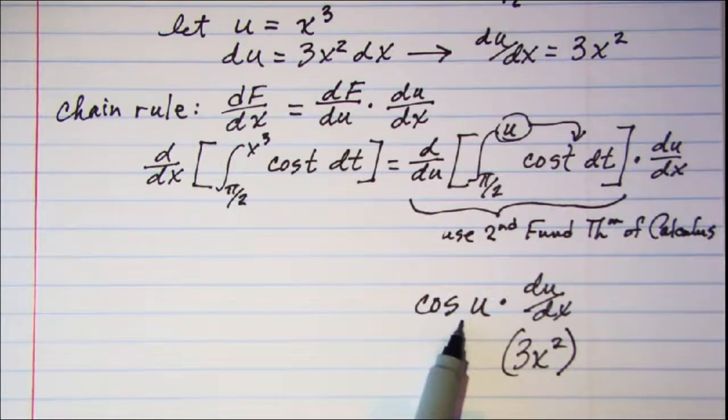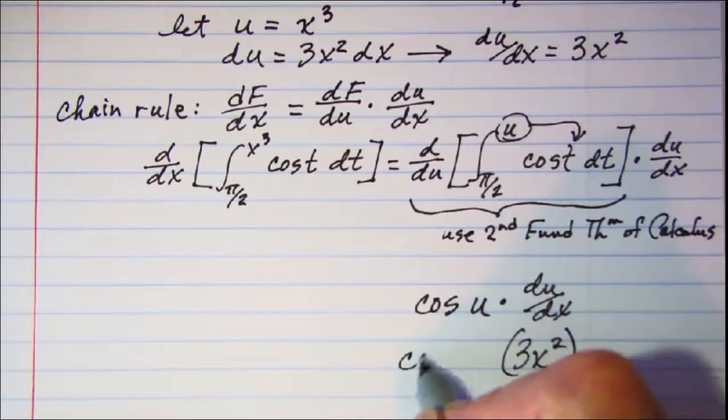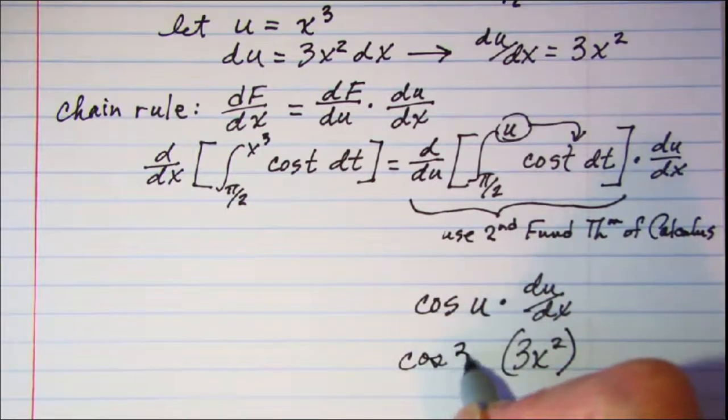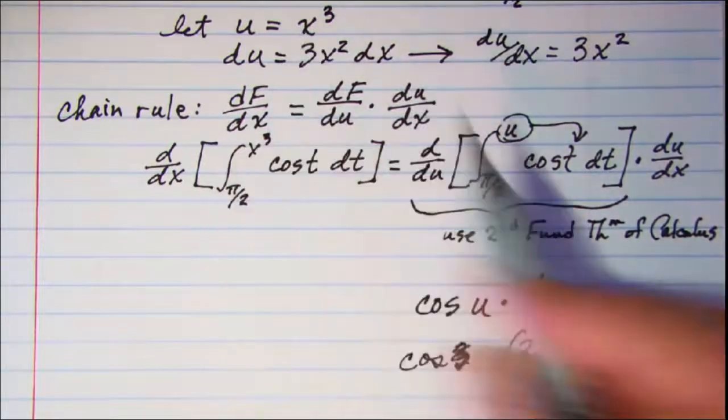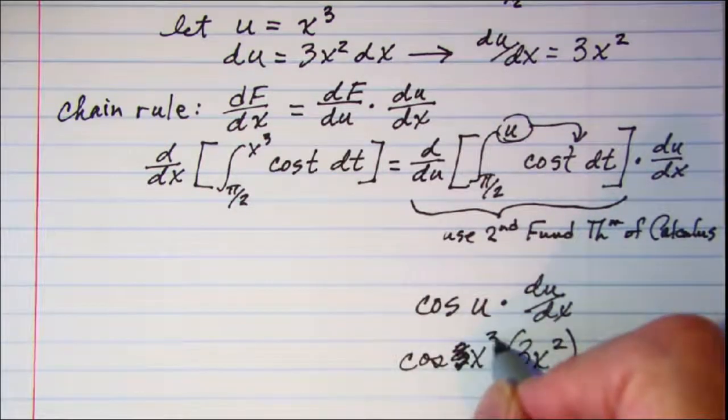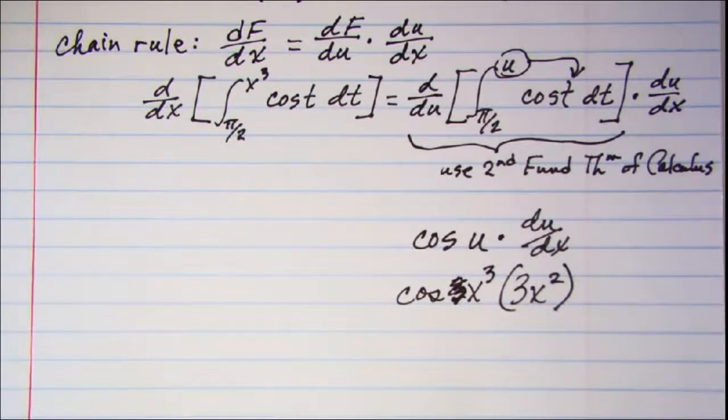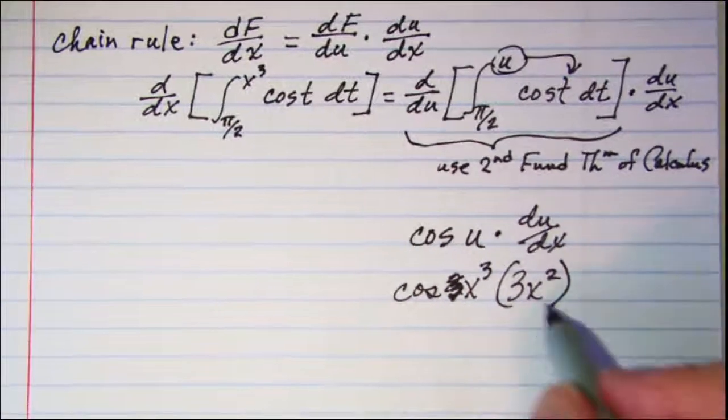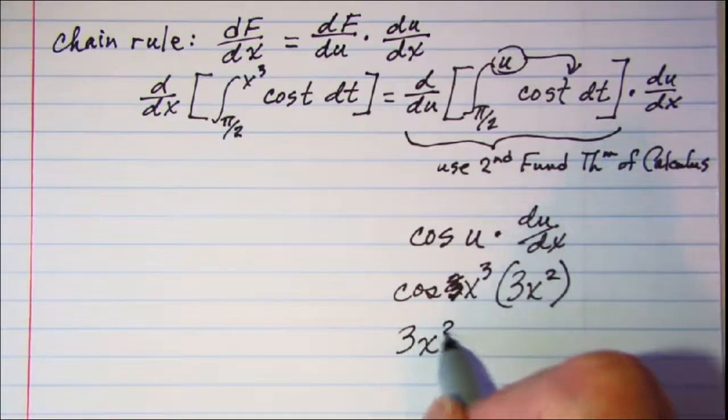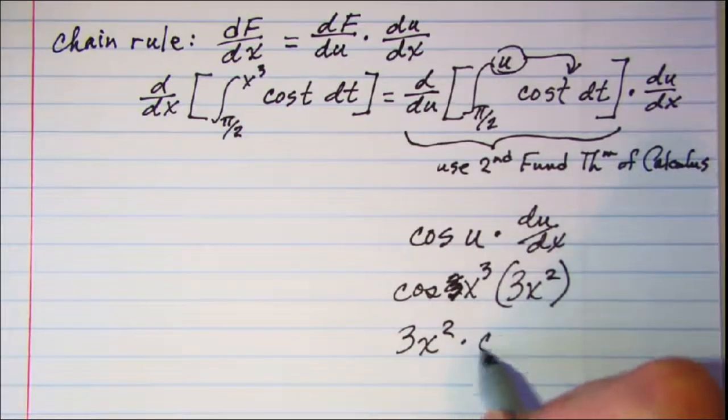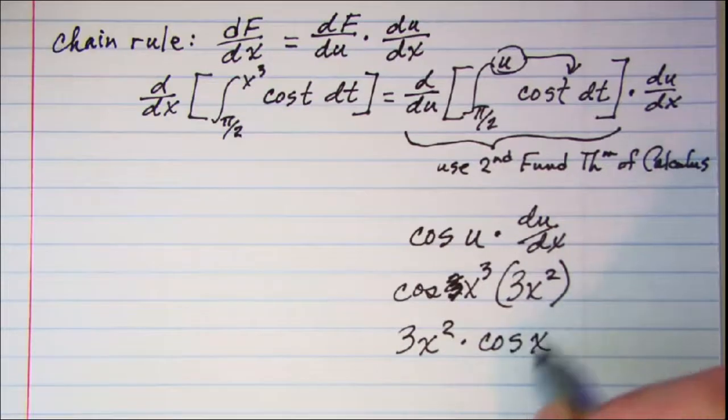And this is cosine x cubed so we could probably write this with this factor in front. So 3x squared times the cosine of x cubed.